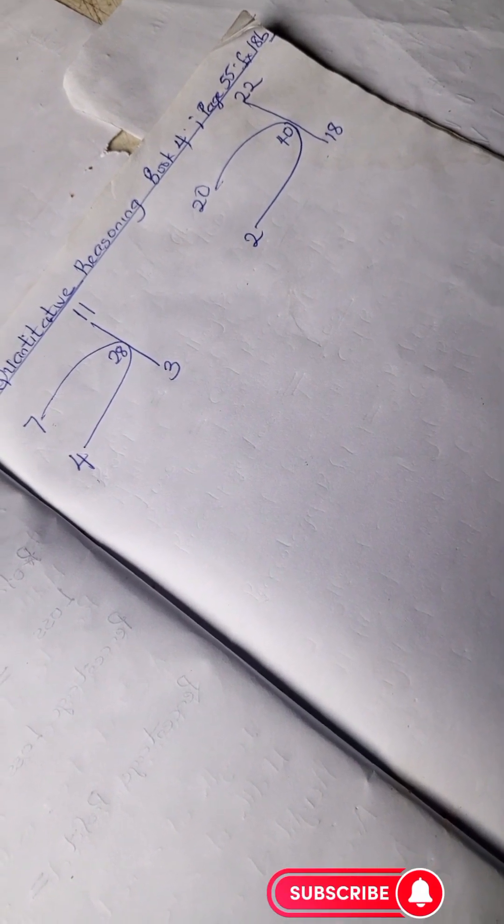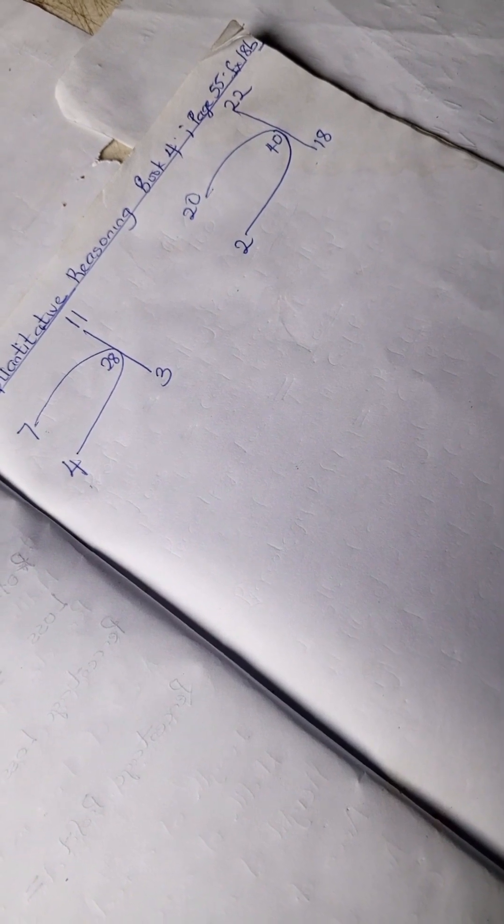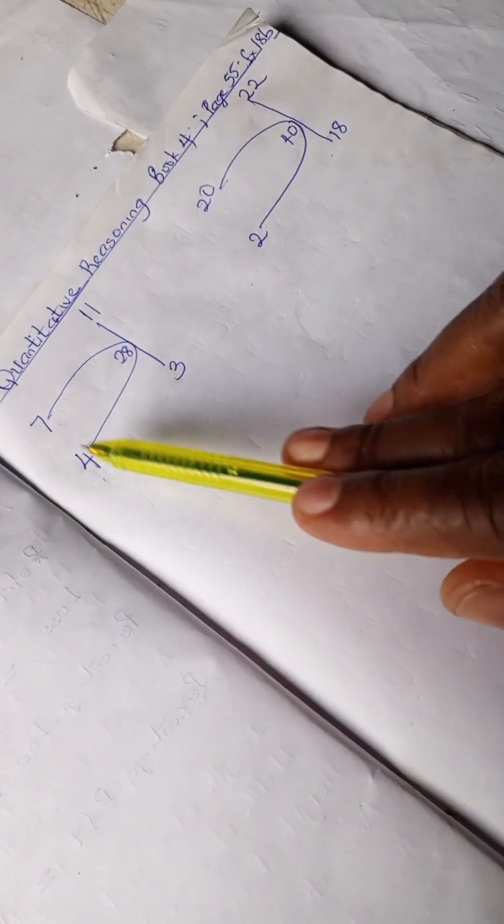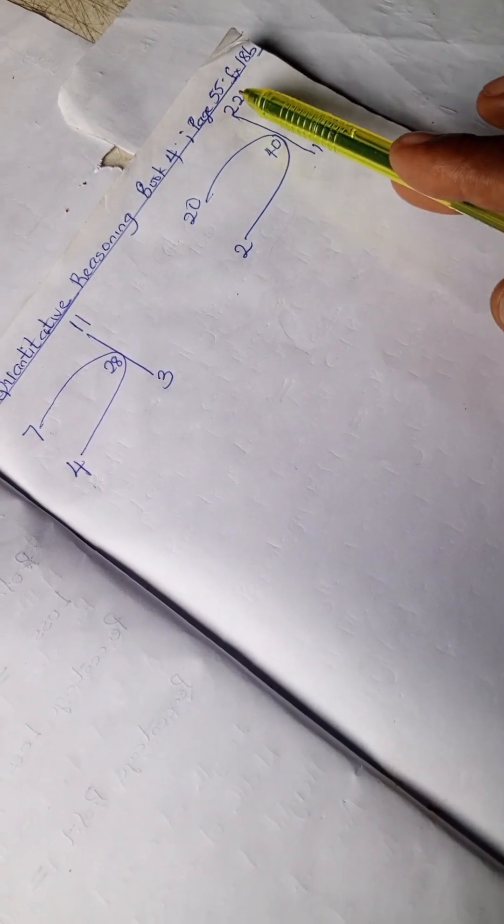All right so we have this problem we have 7, 4, 11, 28, 3 and this example we have 22, 40, 22 and 18.